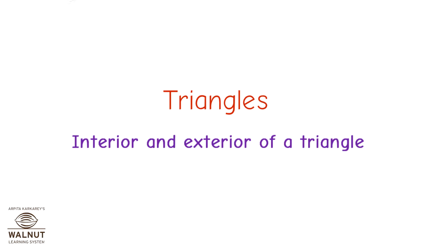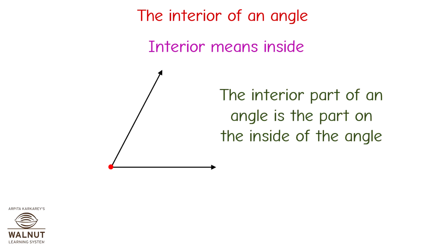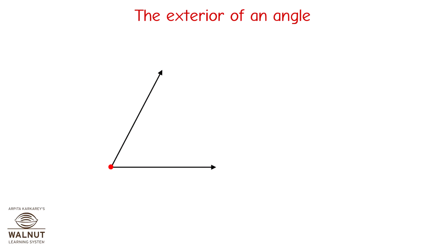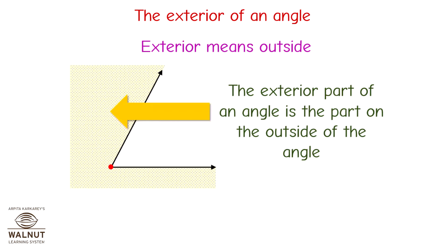Triangles: interior and exterior of a triangle. The interior of an angle — interior means inside — the interior part of an angle is the part on the inside of the angle. The exterior of an angle — exterior means outside — the exterior part of an angle is the part on the outside of the angle.